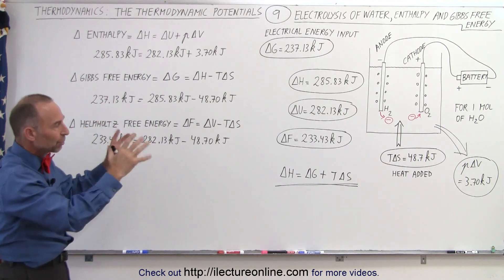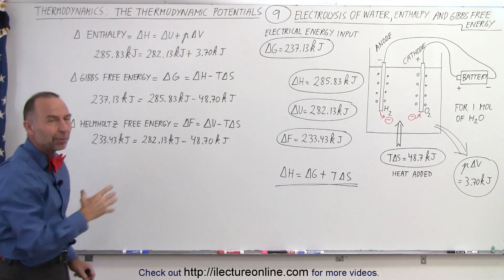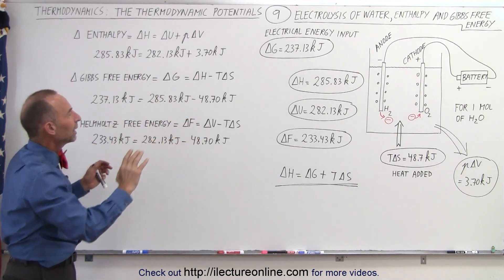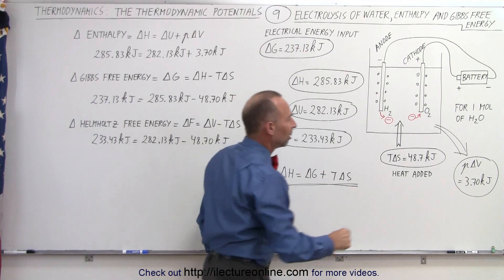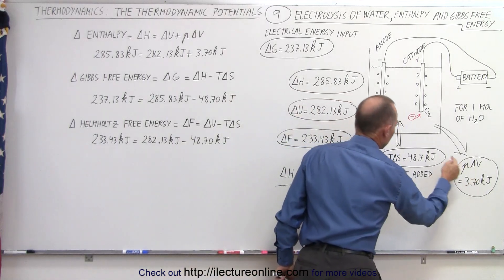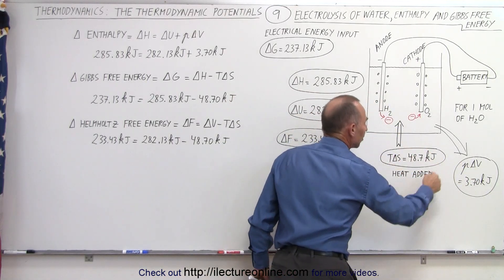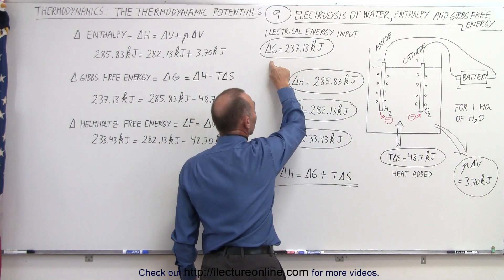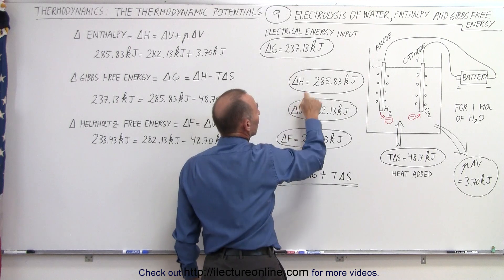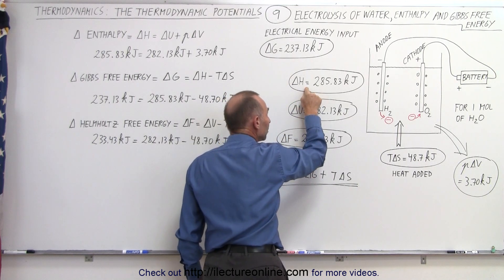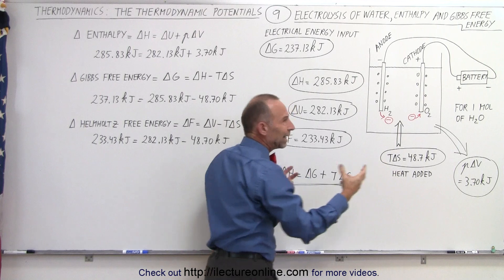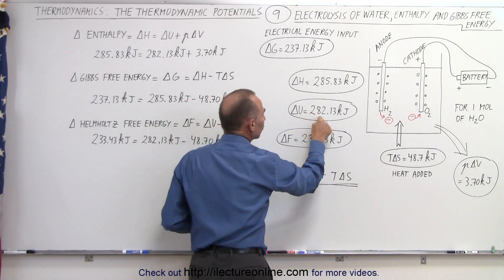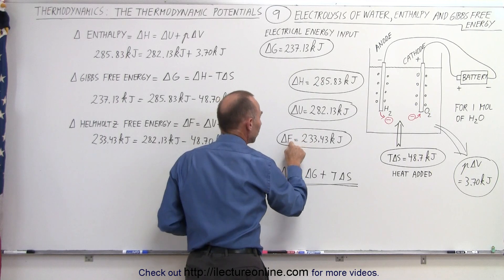So in a very nice process that we've probably seen before in our chemistry class, we can see that through this process, we can relate all the various aspects. The work done by the system. The term defined by the change in entropy. We can see the electrical energy input, which is considered the Gibbs free energy. The change in enthalpy, delta H, which is the total energy added to the system. We can see the delta U, the change in internal energy. And then the Helmholtz free energy.